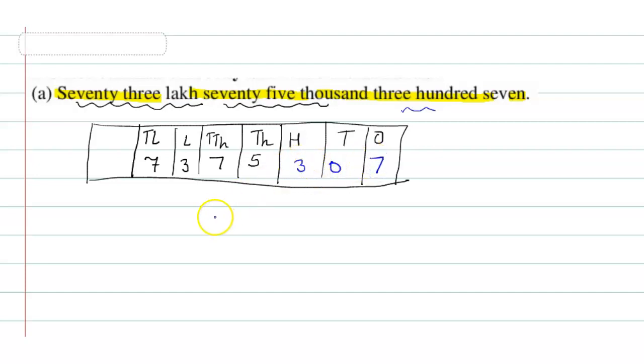So this is your numeric form: 73,75,307. Now put the commas in this.